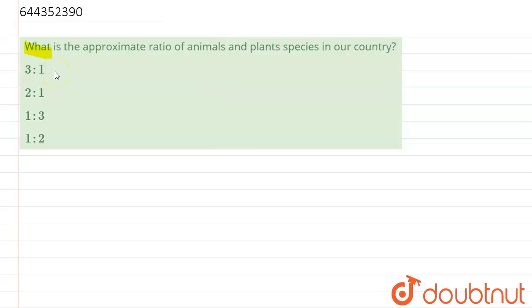It says, what is the approximate ratio of animal and plant species in our country? Now if you see, in our country we have a very rich variety of animal and plant species, and around there are total around...